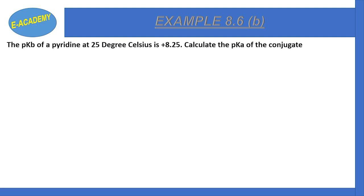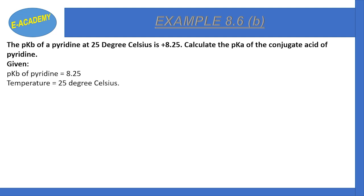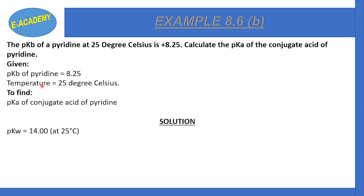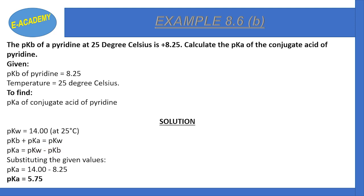Example 8.6 Part B: The pKb of pyridine at 25°C is 8.25. Calculate the pKa of the conjugate acid of pyridine. Using the same relationship pKa + pKb = pKw, and pKw = 14 at 25°C: pKa = pKw − pKb = 14 − 8.25 = 5.75.